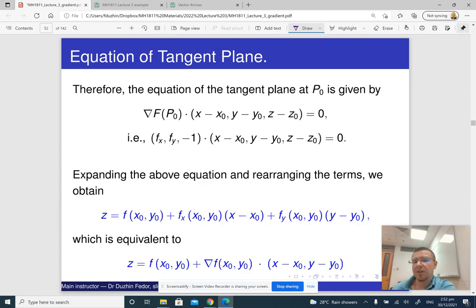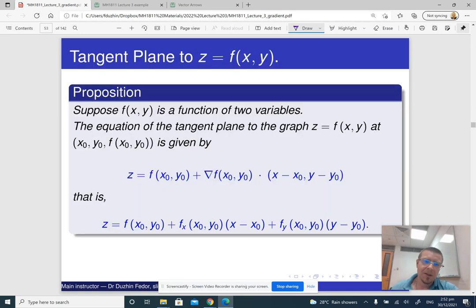And then by just rearranging the terms, we get this equation. It's not really that different from the equation of the tangent plane to a level surface. So that's basically what we just obtained.